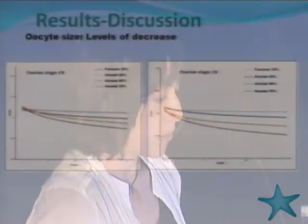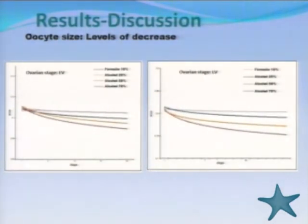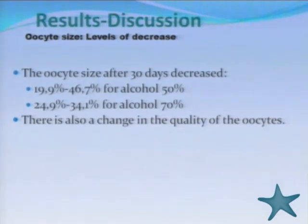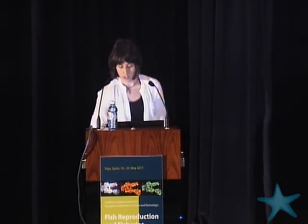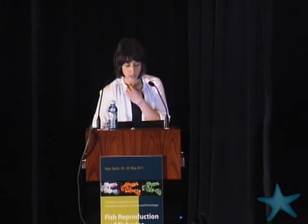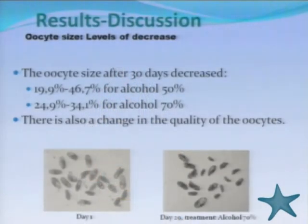Another very important result was that the relationship between oocyte size and days was not linear, as the main shrinkage occurred during the first days of preservation. After 30 days, oocyte size decreased by 19.1 to 46.7% for alcohol 50%, and by 24.9 to 34.1% for alcohol 70%. Additionally, there was a change in the quality, shape, and morphology of the oocytes, as visible when comparing images from day one and day 29 of preservation.